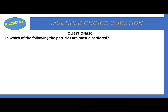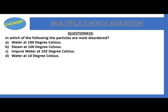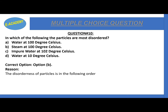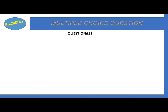Question 10. In which of the following are particles most disordered? Water at 100°C, steam at 100°C, impure water at 102°C, or water at 10°C. The correct answer is steam at 100°C, which is in the gas phase. The order of disorderedness is: solid has the least, liquid has more, and gas has the most disorderedness.